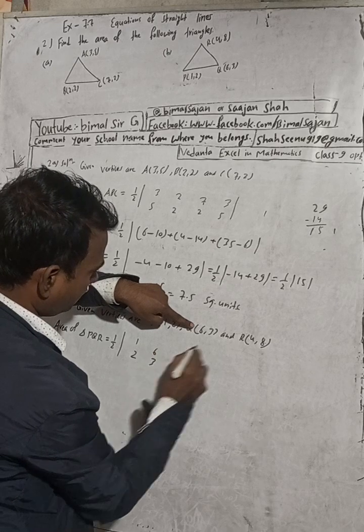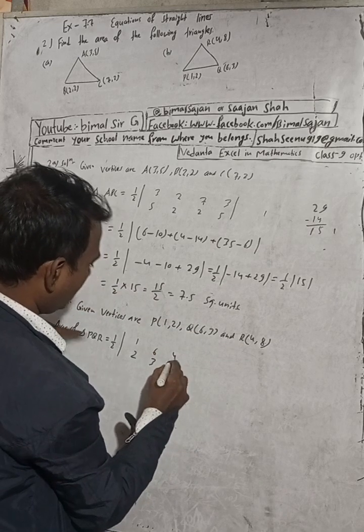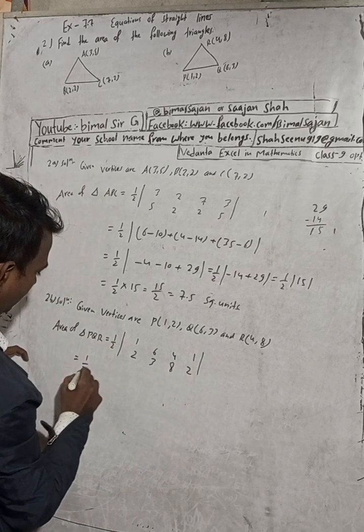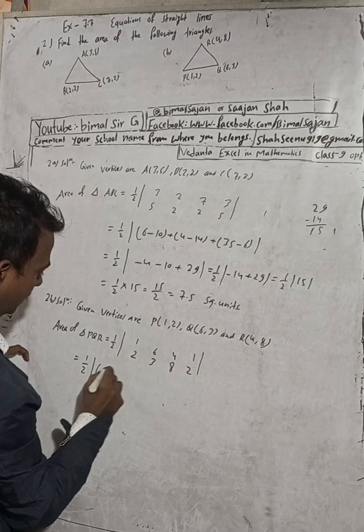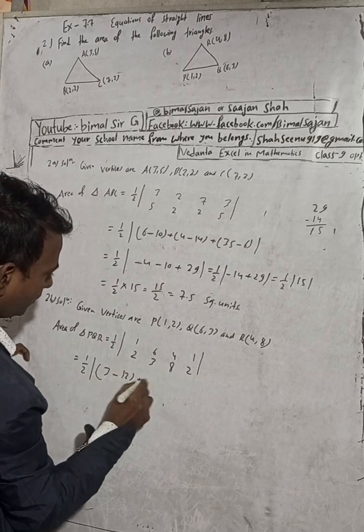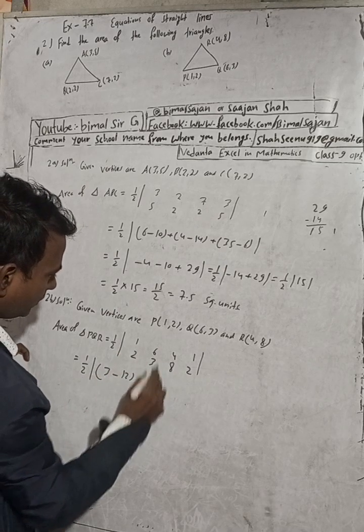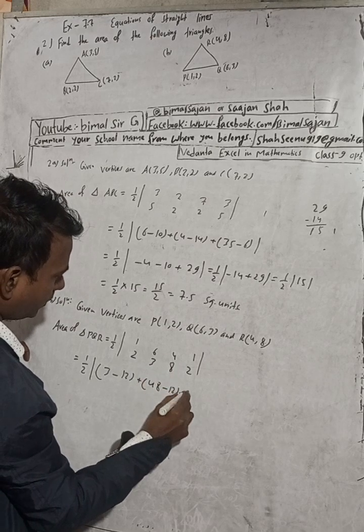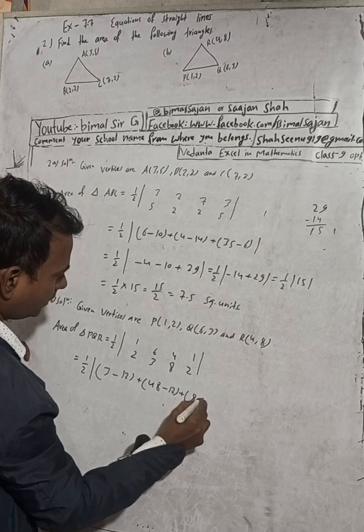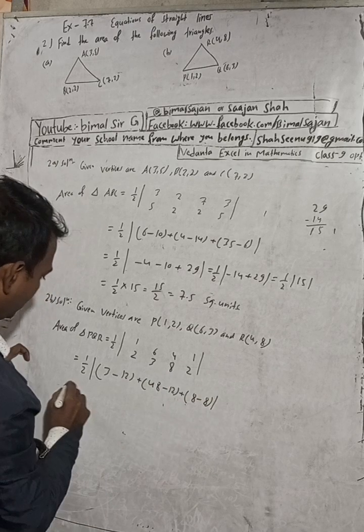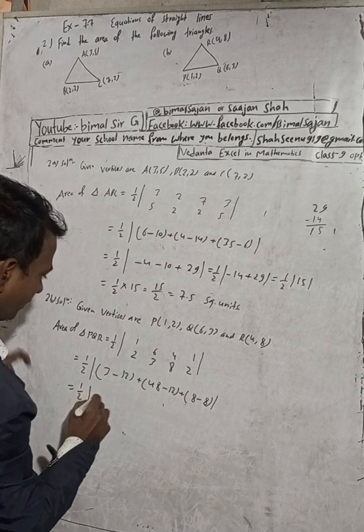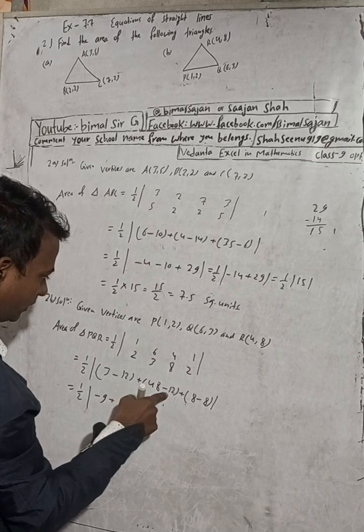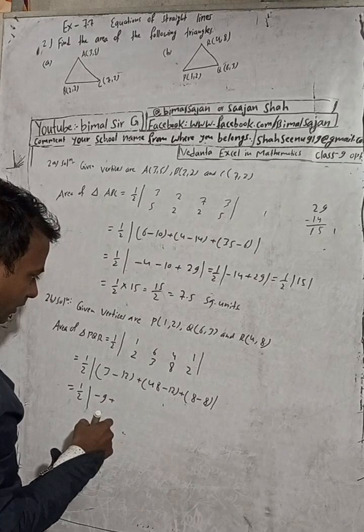This is equal to 1/2 modulus: 1×3 is 3 minus 6×2 is 12, plus 6×8 is 48 minus 4×3 is 12.